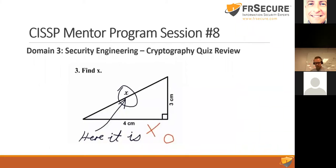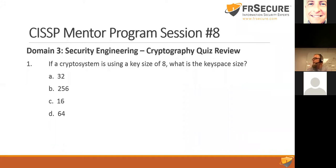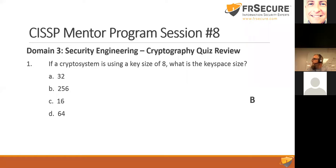I promised to go over the cryptography quiz, so we'll go through that real quick. First question: if a crypto system is using a key size of 8, what is the key space size? If the key size is 8 — that means 8 bits — this would be 2 to the 8th. So 2 times 2 times 2 times 2, 8 times, gives us 256. So the key size is 8, the key space is 256.